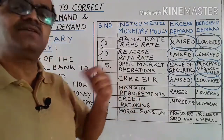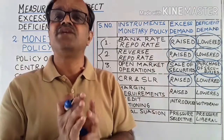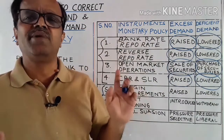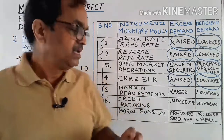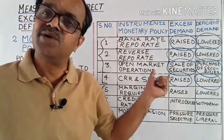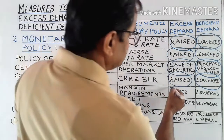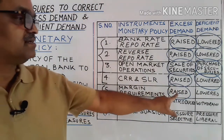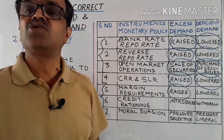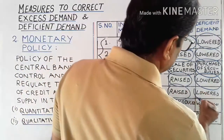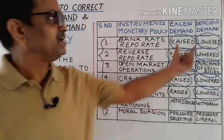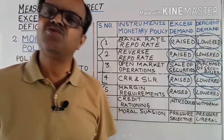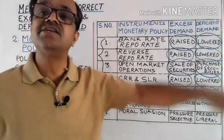The fifth instrument is margin requirement — the difference between the value of the asset and the amount of loan sanctioned, essentially a cash down payment. During excess demand, the central bank increases margin requirements, which decreases demand for loans and reduces aggregate demand. During deficient demand, margin requirements are reduced so that more money flows into the economy, resulting in an increase in aggregate demand.